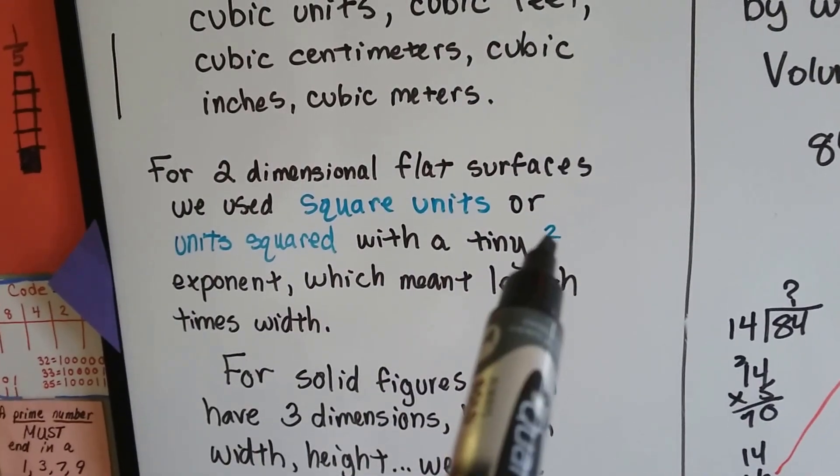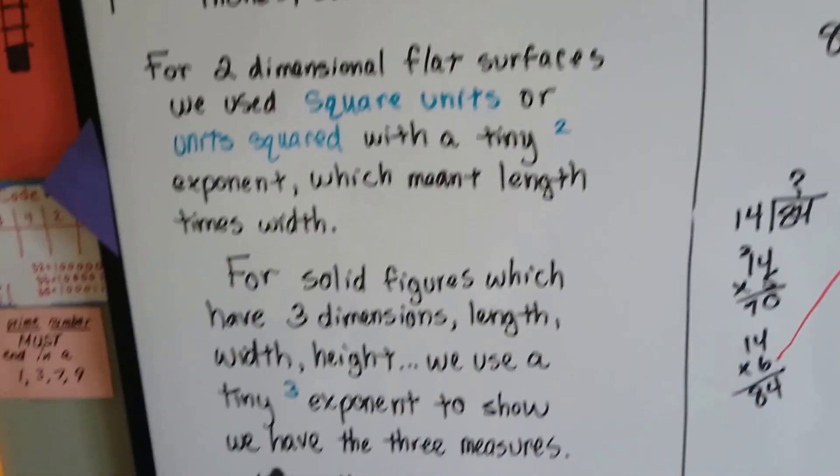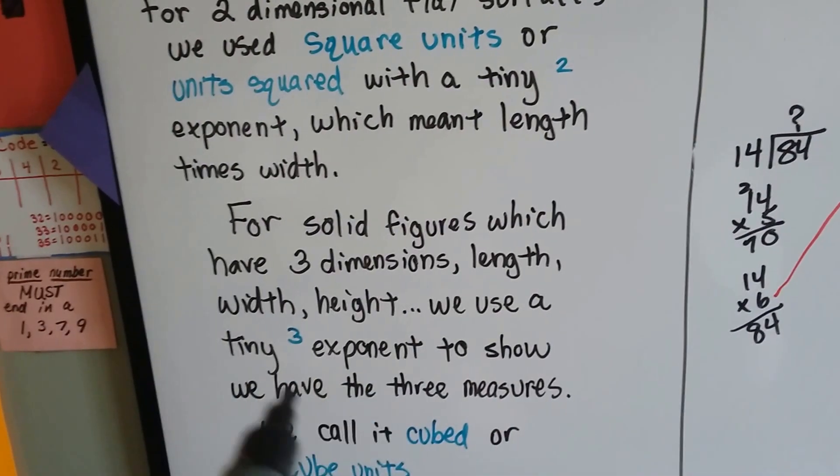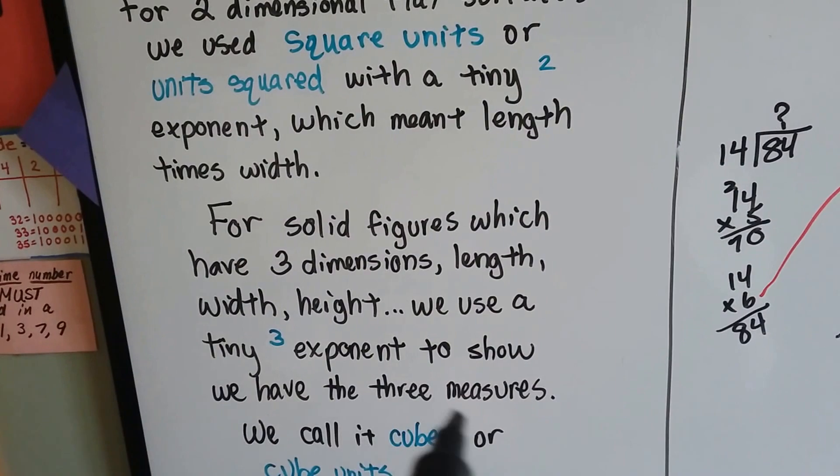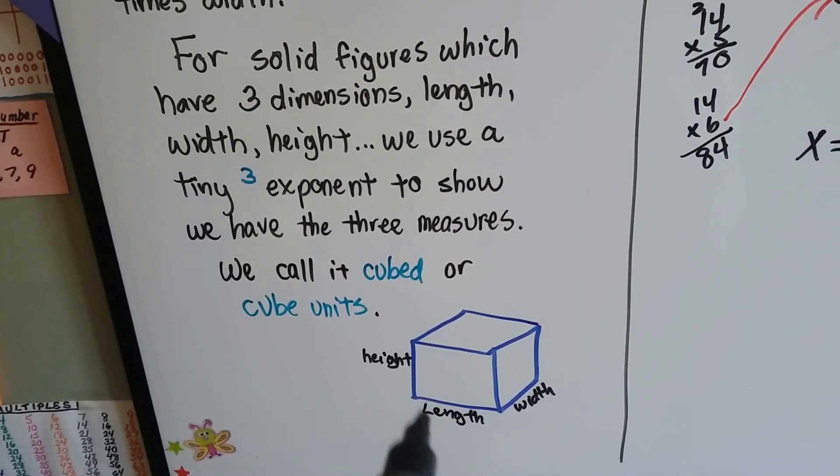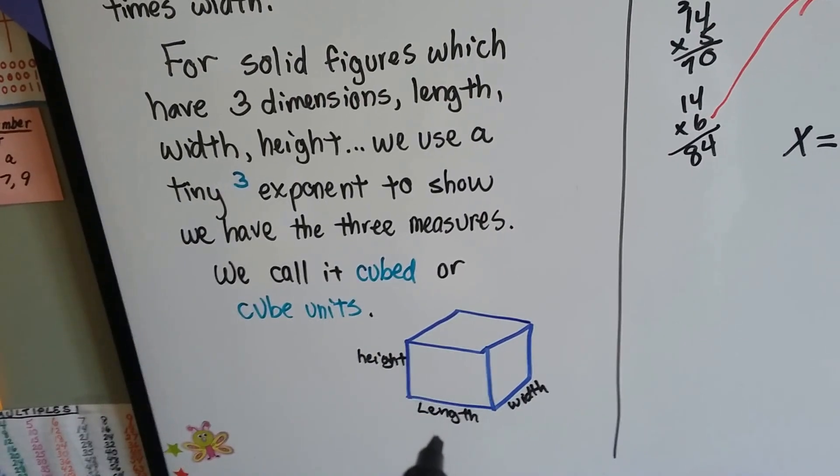For solid figures we use three dimensions: length, width, height. So we use a tiny 3 exponent to show the three measures length, width, height, and we call them cubed or cube units.